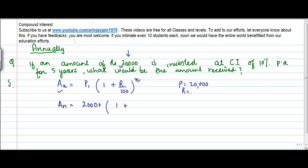Into 1 plus rate — now please note that the rate referred here is a yearly rate. The compound interest rate is 10% per annum, so again it is per annum. If it was not per annum, I would handle it differently, which I'll discuss in subsequent problems. So the rate is 10 upon 100.